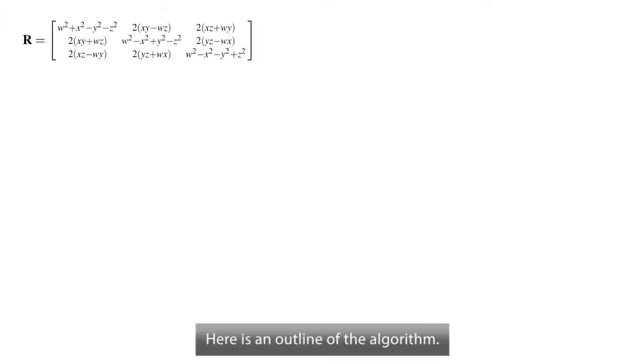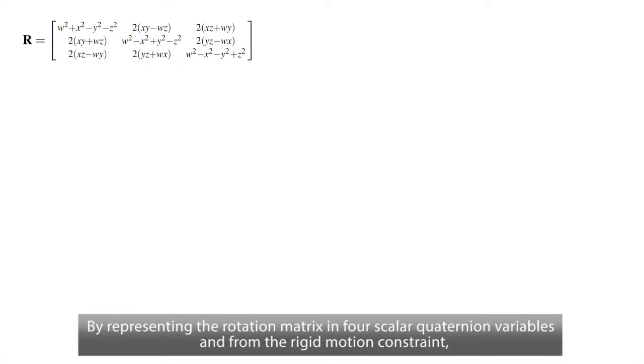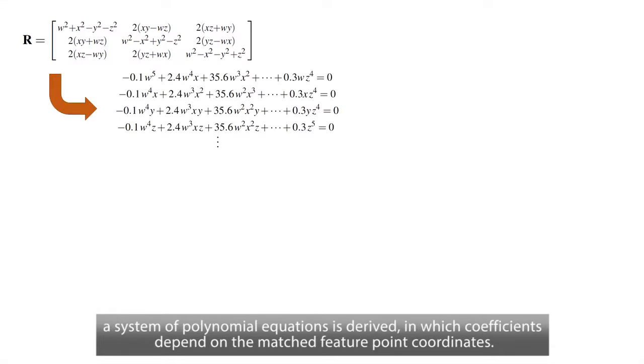Here is an outline of the algorithm. By representing the rotation matrix in four scalar quaternion variables and from the rigid motion constraint, a system of polynomial equations is derived in which coefficients depend on the matched feature point coordinates.